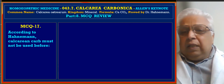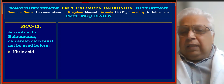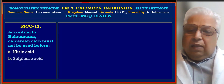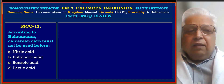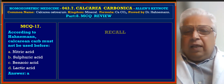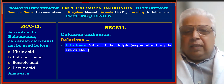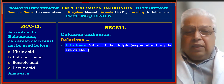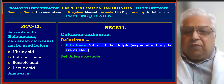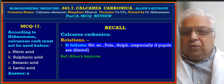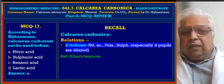MCQ 17: According to Hahnemann, Calcarea Carb must not be used before — A. Nitric Acid, B. Sulphuric Acid, C. Benzoic Acid, D. Lactic Acid. Answer is A, Nitric Acid. Reference from Allen's Keynote, Calcarea Carb relationship: it follows Nitric Acid, so it should not be used before Nitric Acid.